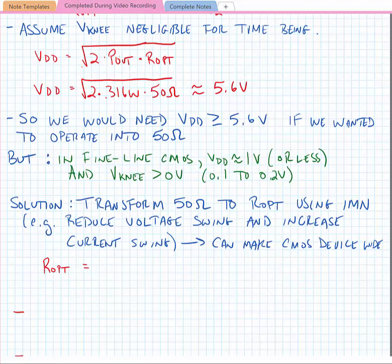This is important because though a CMOS device can't handle a very high voltage across it, if we make it wide it can handle a high current.